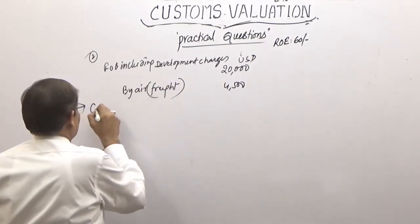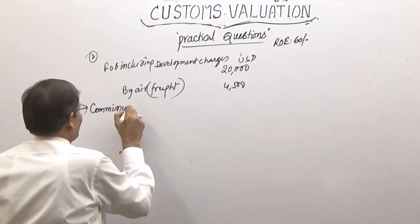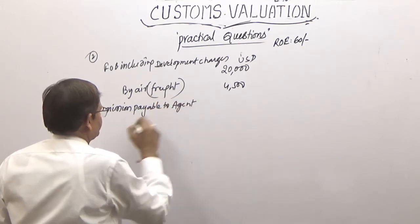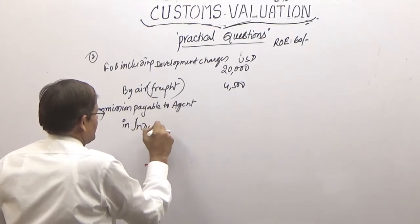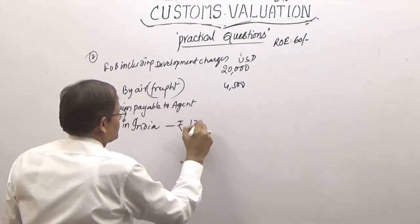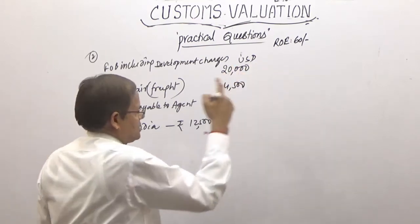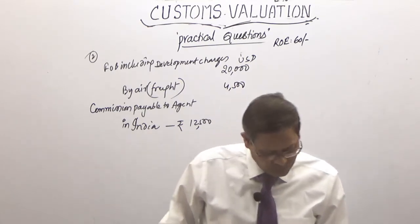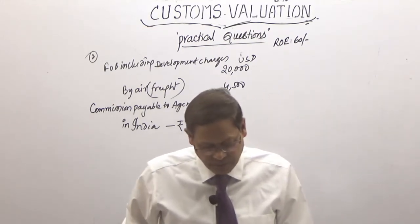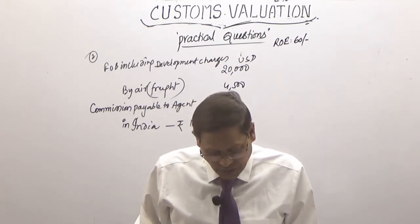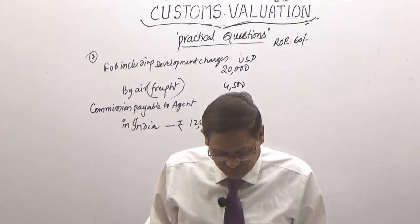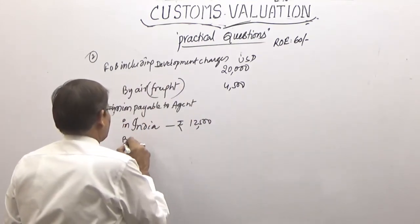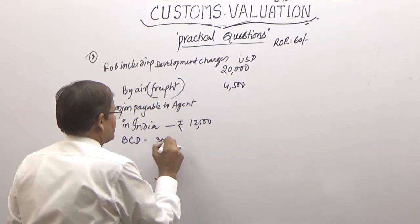There is a catch here — this commission is payable to an agent in India, and it is in Indian rupees: ₹12,500. Then rate of duties: basic customs duty is 30% and IGST is 12%.